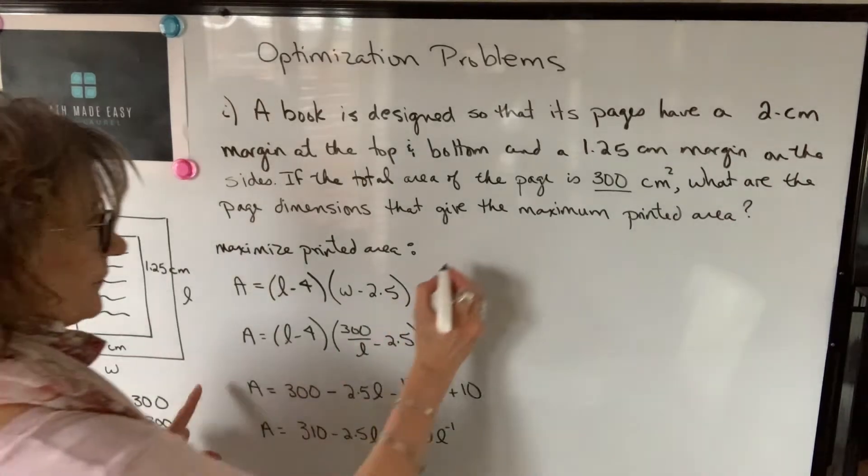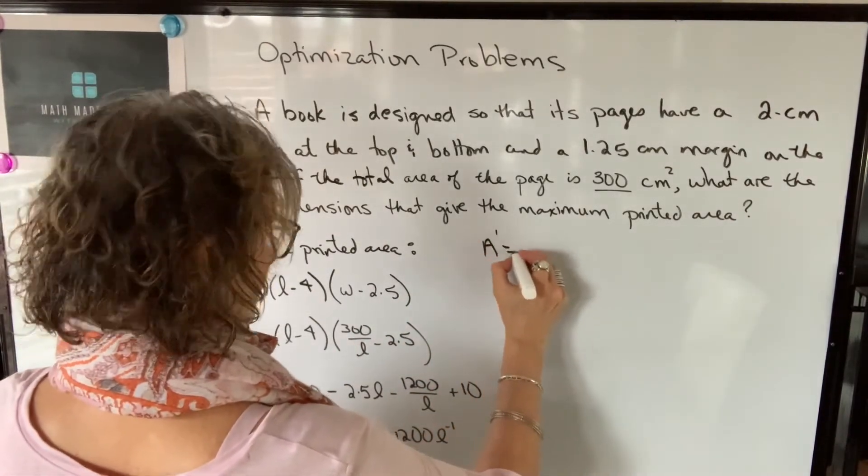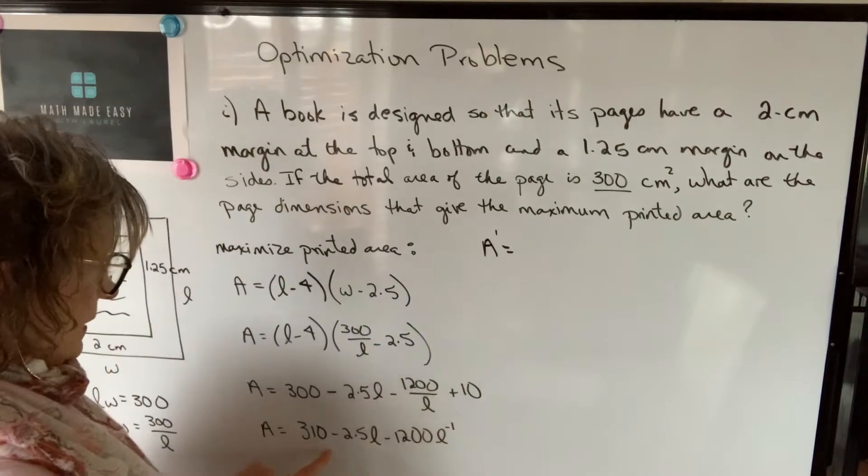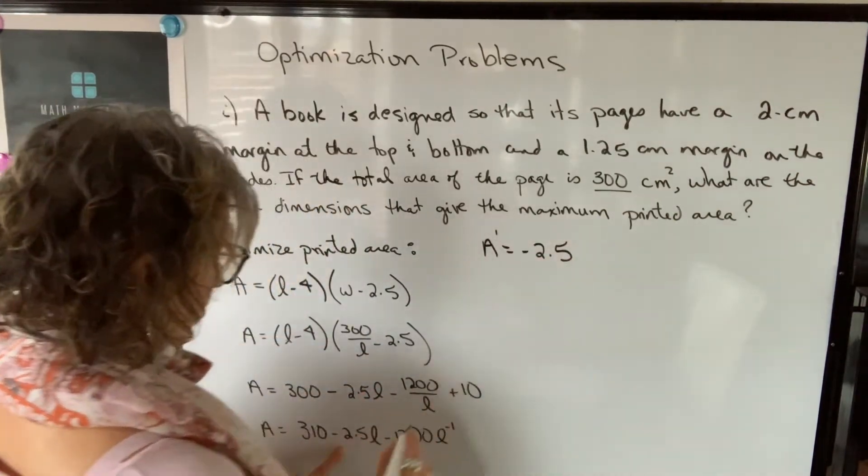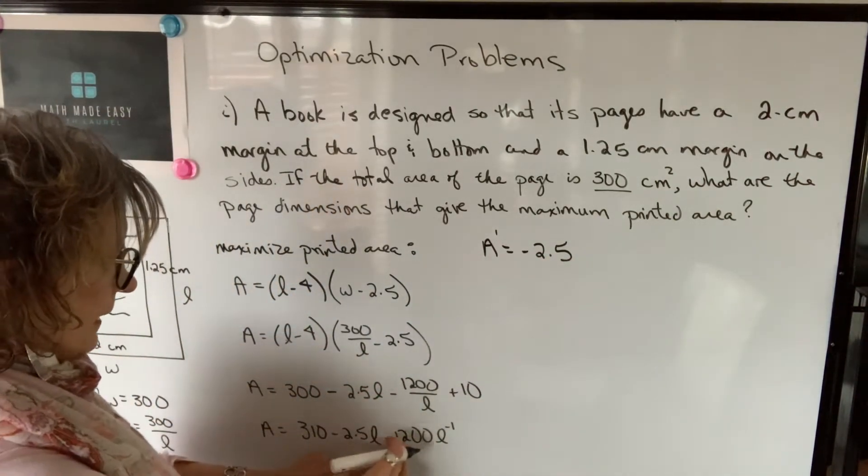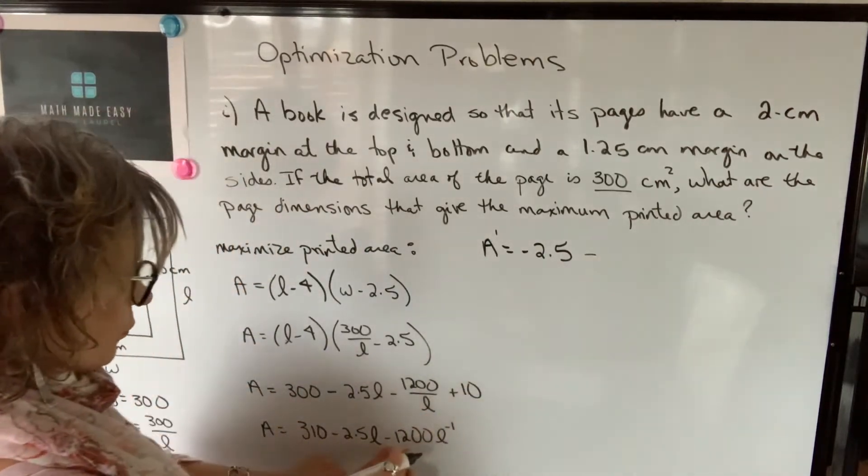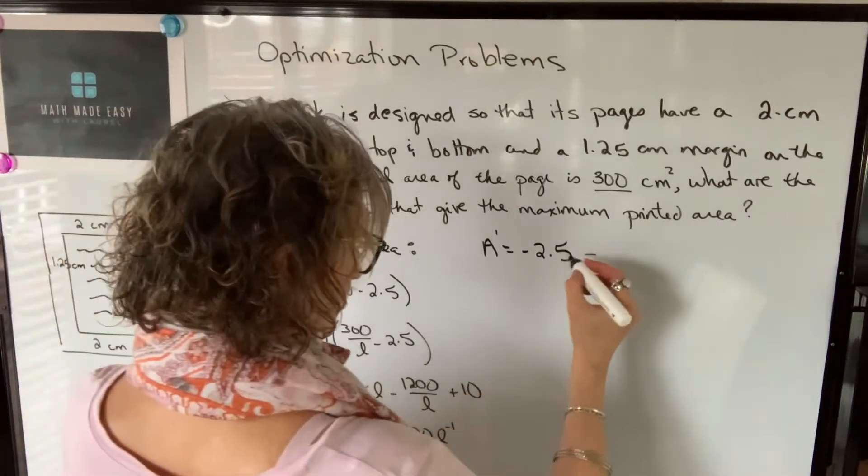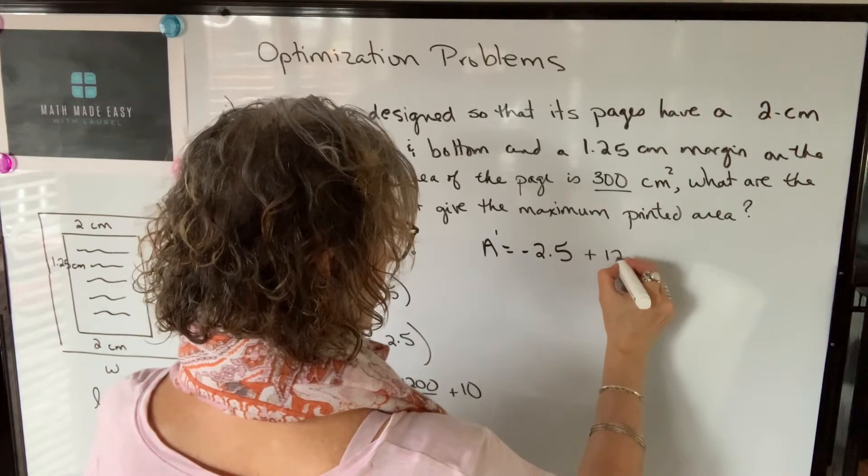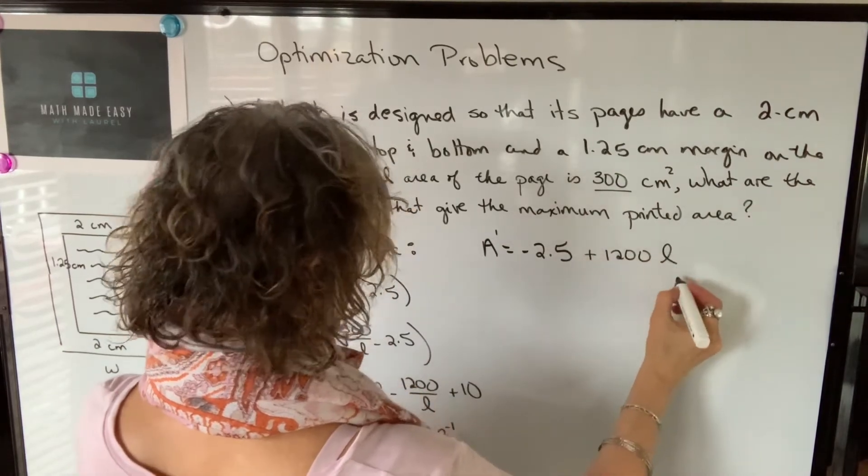let's differentiate. So the derivative will be 0 minus 2.5 or negative 2.5 times 1 minus 1200 times negative 1 is negative 1200, so that makes it positive. 1200L to the negative 2.